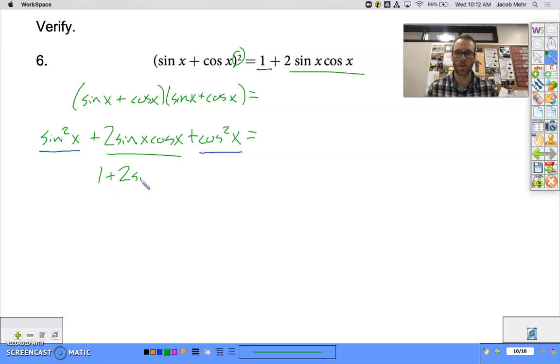And I have one plus two sine of x cosine of x equals, and now I can just bring this all the way down. One plus two sine of x cosine of x. And I'll put that check mark that I did it. I verified that this really is true. The sine of x plus the cosine of x squared really is equal to one plus two sine of x cosine of x.